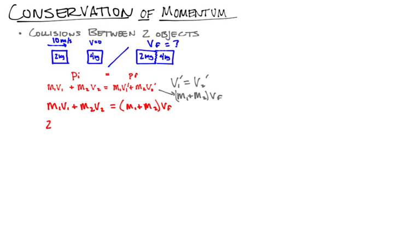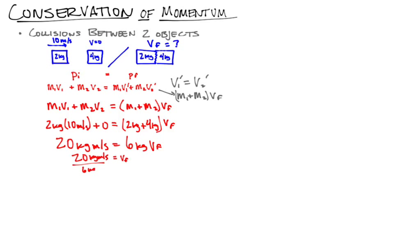Now, it's going to be convenient for us at this point to put in some numbers. So, M₁ is 2, V₁ is 10. And since M₂ isn't moving... So, we'll take these numbers and plug them in. So, we have 20 kilogram meters per second. That's my initial momentum, is equal to 6 kilograms times my final velocity, which is the final momentum of the system. So, final velocity is going to be 20 over 6. Kilograms cross out in each case. And that final velocity comes out to be 3.33 meters per second.